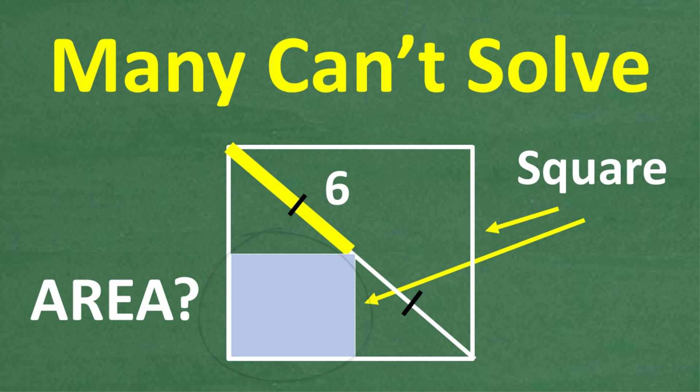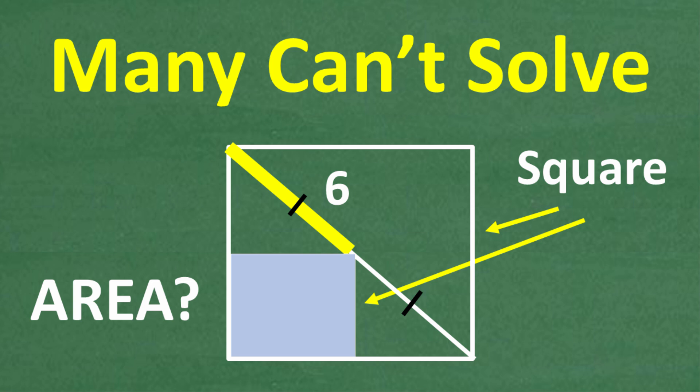The only information that we have is that the midpoint of the diagonal — from here to here is the diagonal of the larger square — but the midpoint, or this length right here, halfway through the diagonal, is six units long.